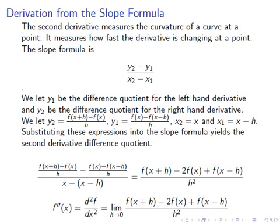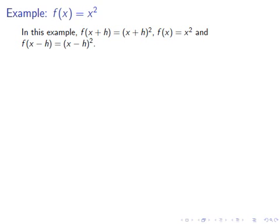Now we take the limit as the horizontal distance h approaches 0 to find the actual second derivative. In this example, we will cover the special case of the function f(x) = x squared. Here, f(x+h) equals (x+h) squared, f(x) equals x squared, and f(x-h) equals (x-h) squared.